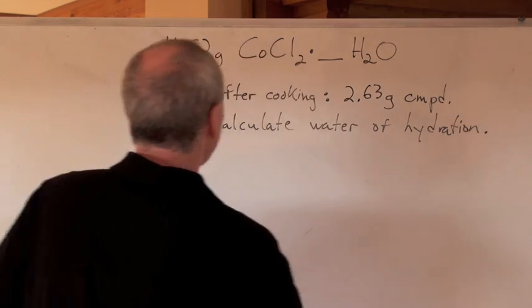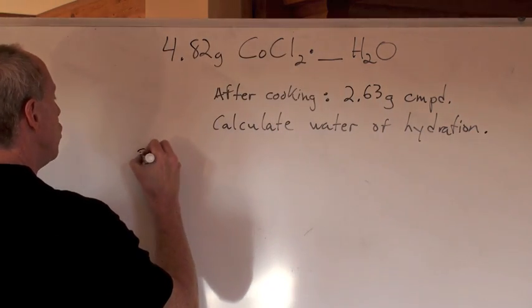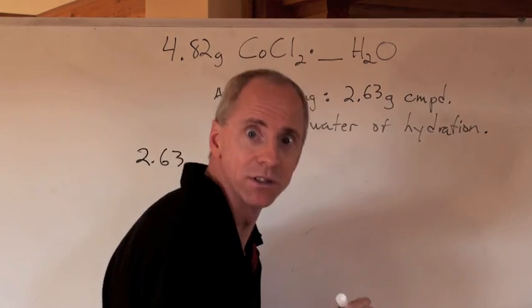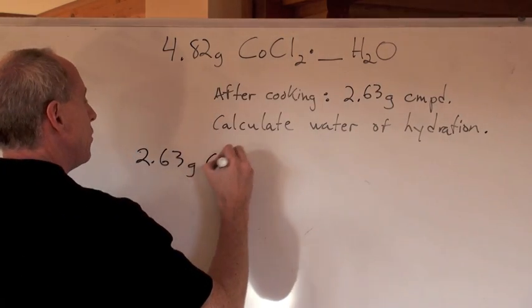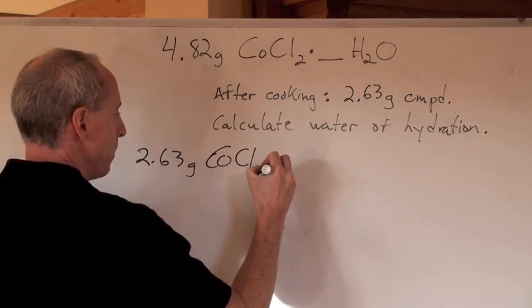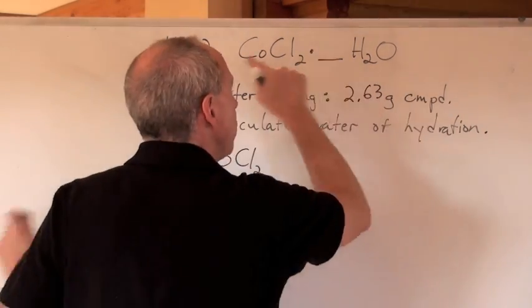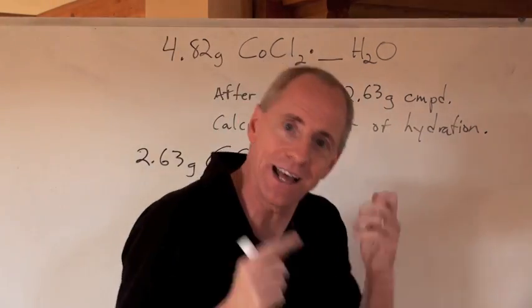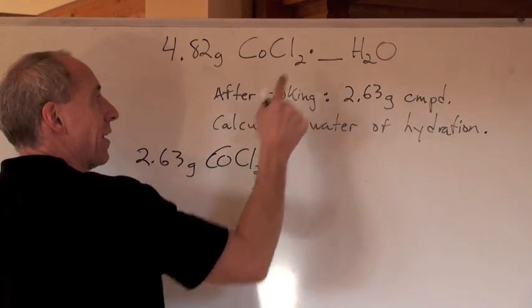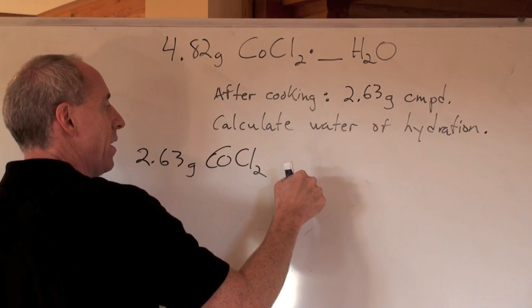How do you do it? Well, if I've got 2.63 grams of compound, and the compound is CoCl2, after I cook this compound, there's no more water in it, that's the whole idea. The water is the thing that evaporates and so I've got this mass of that chemical left over after heating.